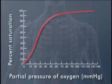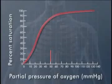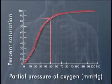Its shape means that although the partial pressure of oxygen in the blood returning from the lungs and being pumped out by the arteries may be reduced to only 50% of the normal value — say, due to lung disease or high altitude — hemoglobin will still be 85% saturated with oxygen.